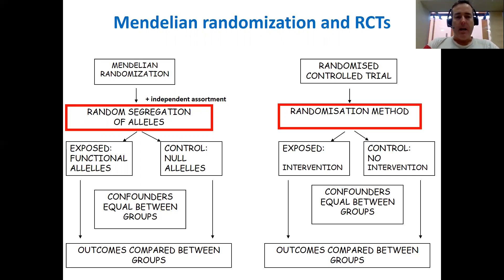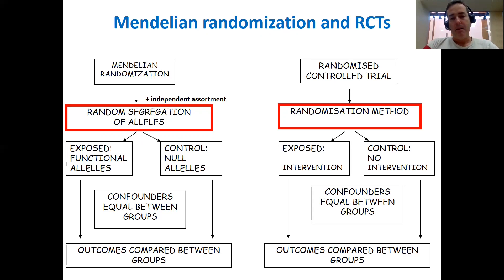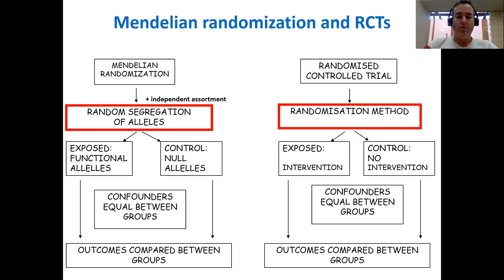One way to think about Mendelian randomization is as nature's randomized controlled trial. Mendelian randomization uses Mendel's laws of segregation and independent assortment to randomly assign individuals to an exposed group and a control group. In the exposed group they'll have functional alleles, and in the control group they'll have null alleles. This random segregation and independent assortment ensures that on average those two groups are equal with respect to both known and unknown confounders. So if we compare those two groups on an outcome of interest and there is a difference between them, that's evidence that the exposure causes the outcome.